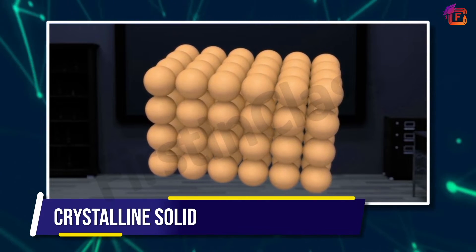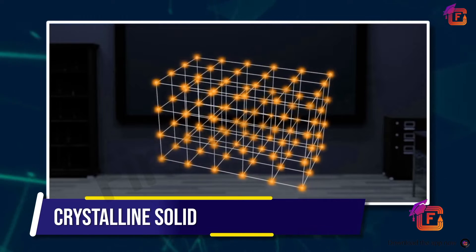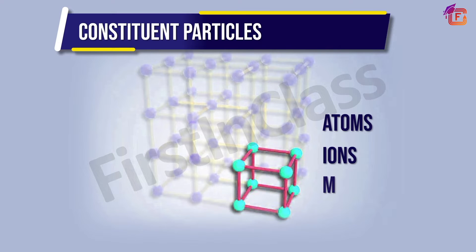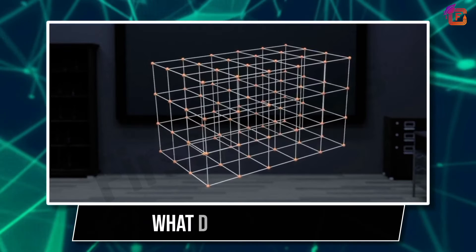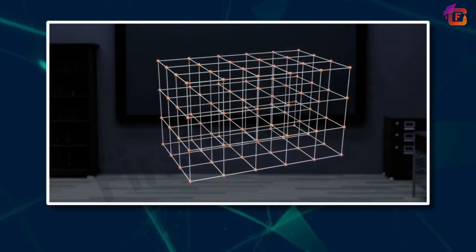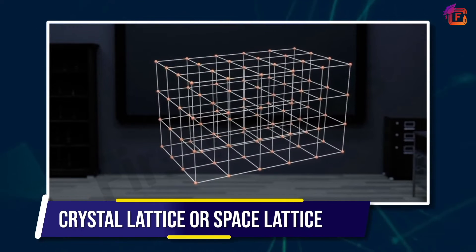Let's clear this concept with a hypothetical example, as this term is very important and we will use it throughout the chapter. Suppose we have a bulk of crystalline solid. As we know, there is long-range order in crystalline solid. Now represent the constituent particles — which may be atoms, ions, or molecules — by points in space. Here we observe a three-dimensional regular arrangement of points in space. This whole arrangement is collectively known as crystal lattice or space lattice.